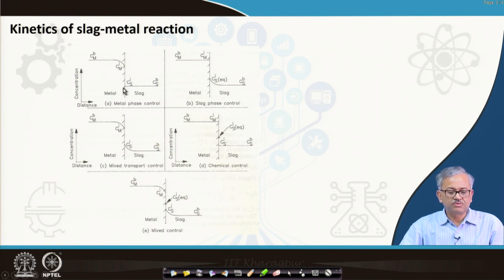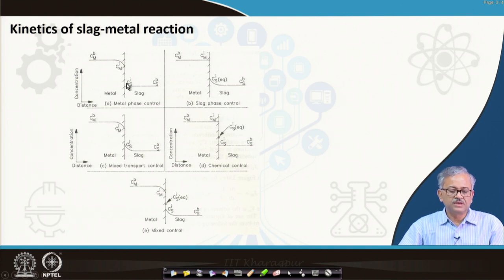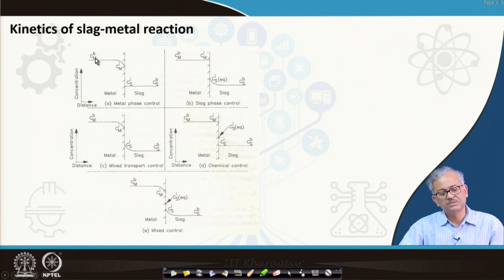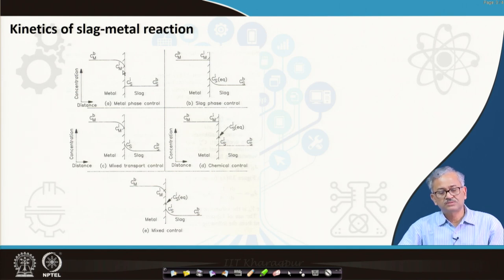The chemical reaction at the surface is very fast, so complete partitioning of the impurity has taken place at the interface. CSI is the concentration on the slag side at the interface, CMI is the concentration of the metal at the interface on the metal side, CSB is the concentration of the impurity in the bulk of the slag, and CMB is the concentration of the impurity in the bulk of the metal phase. The only resistance lies at the concentration boundary layer on the metal phase.